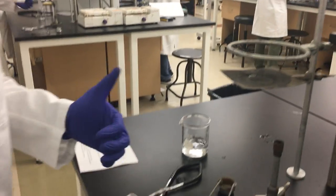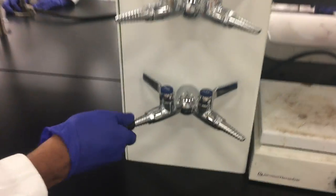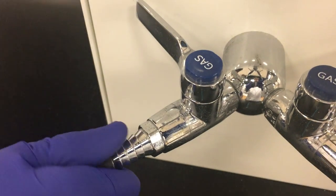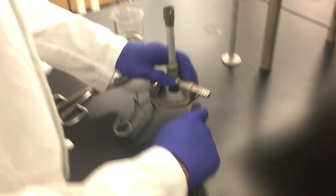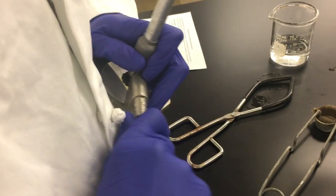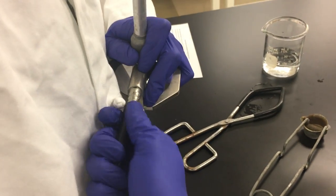Now we're going to begin the quick setup. We're going to take our hose and put it into the gas valve, and then take the other side of it and plug it into the burner right there.